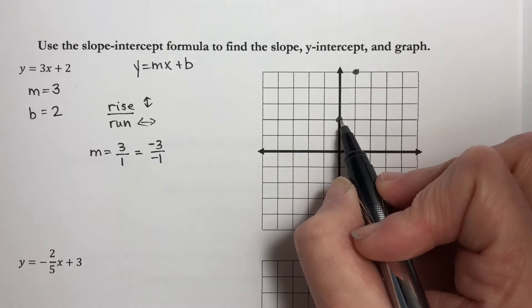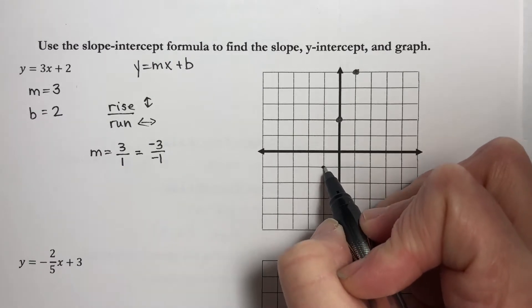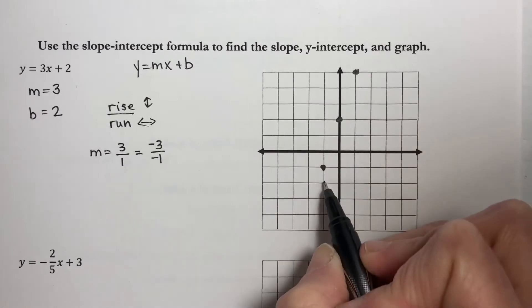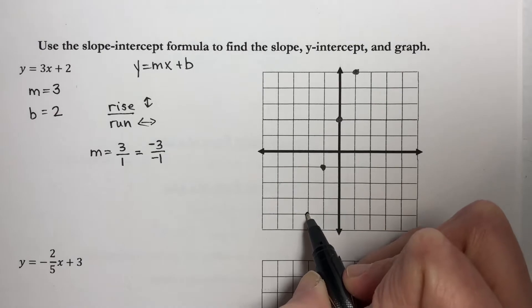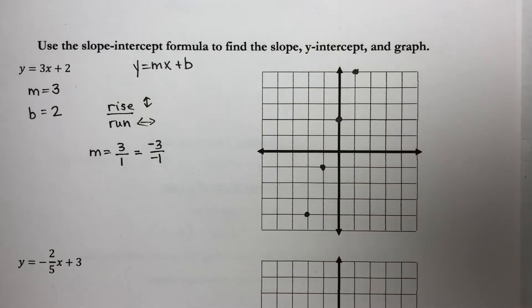So from this point, I can back up and go negative 3, negative 1. And I can keep doing this to generate as many points on that line as I wish.